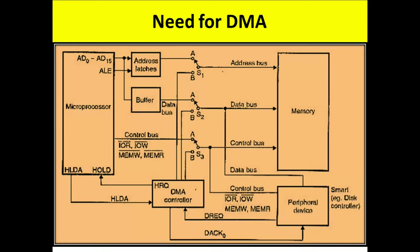Since the processor is effectively isolated from the data transfer function, it is left free to do other processing activities — but only activities that do not require the use of the system bus, because the system bus is now being used for DMA. Thus, DMA is used to transfer big blocks of data from or to memory and peripherals. To do this, we require a DMA controller. We will discuss how this DMA controller takes control of the system bus.